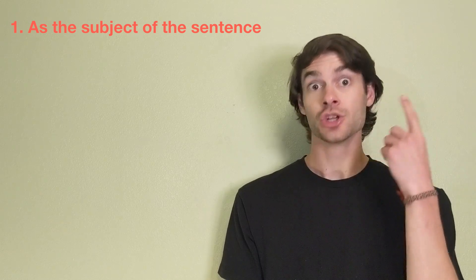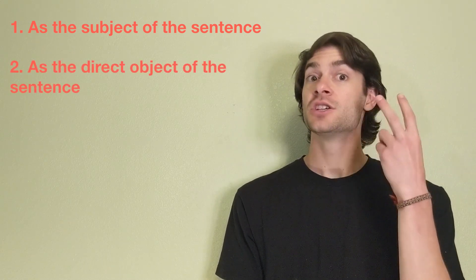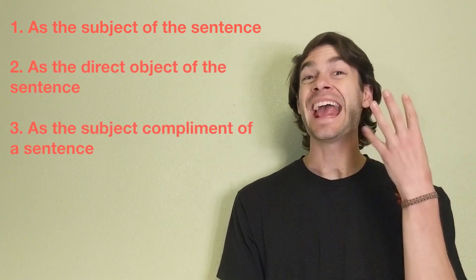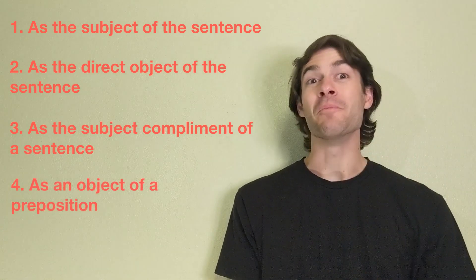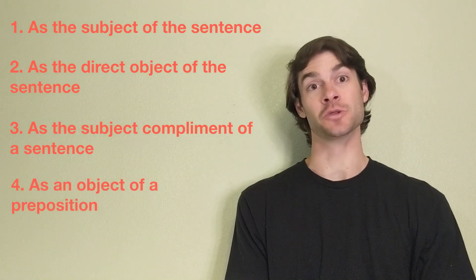These four examples, subject, direct object, subject complement, and object of a preposition are the four main ways in which we use a gerund.